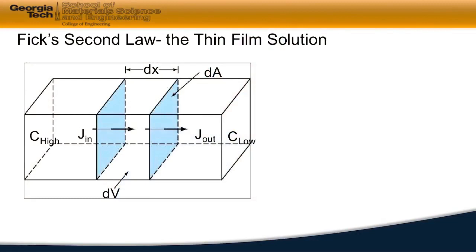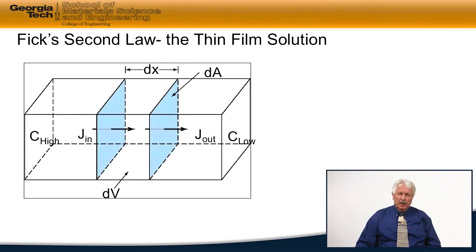Let's examine how Fick's second law was developed. First, we're going to look at a volume element, and that volume element is going to be described in terms of the width of the element times the cross-sectional area. So we're looking at a region which is a uniform cross-section.